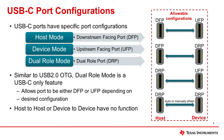Now let's look at some possible configurations as an example. When a UFP is connected to a DRP, the DRP will configure itself into a DFP. Similarly, when a DFP is connected to a DRP, the DRP will configure into a UFP. When two DRPs are connected, one will be configured automatically or manually into a DFP, and the other will then be configured into a UFP. Note that UFP-to-UFP or DFP-to-DFP connections are not supported and have no function.